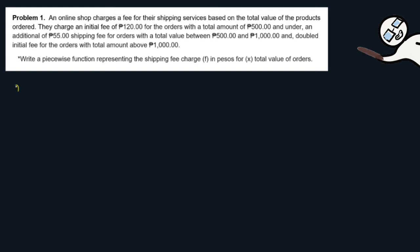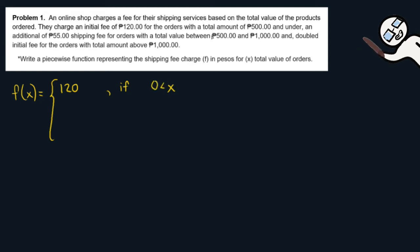The function is F(x) equal to a bracket. Here, 120 pesos is the shipping fee charge, so it is 120 pesos if the total value of orders is 500 and under — that is, if x is greater than 0 and less than or equal to 500, because the shipping fee charge is 120 pesos if the total value of orders is between 0 and 500.